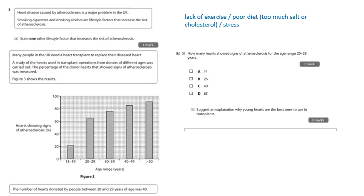Heart disease caused by atherosclerosis is a major problem in the UK. Smoking cigarettes and drinking alcohol are lifestyle factors that increase the risk of atherosclerosis. State one other lifestyle factor. Well, I should have put this on up here. But there you go. Lack of exercise. Poor diet in particular. Too much salt or cholesterol. Bad cholesterol stress. It asks for one other factor. Now, many people in the UK need a heart transplant to replace their diseased heart. A study of the hearts used in transplant operations from donors of different ages was carried out. The percentage of the donor hearts that showed signs of atherosclerosis was measured. Figure three shows the results.